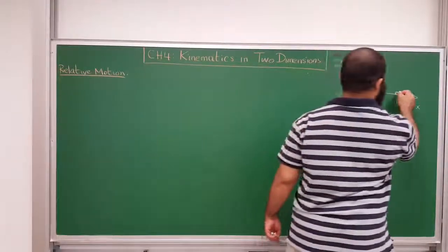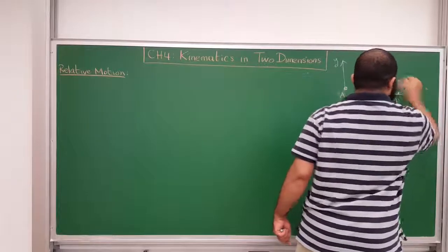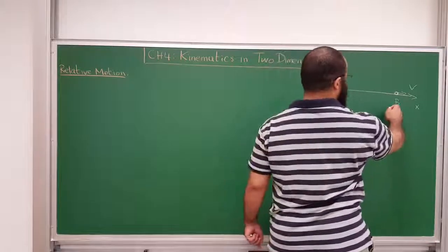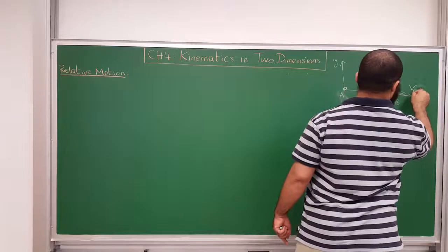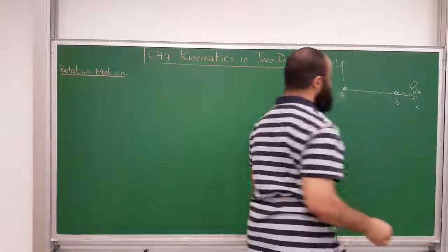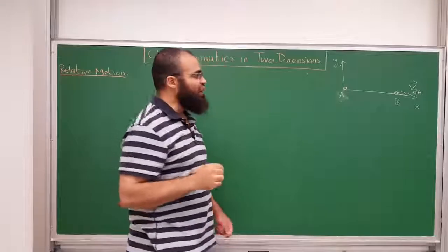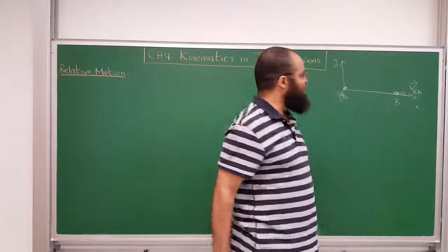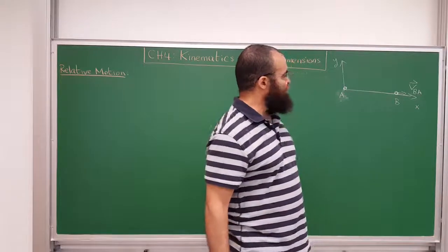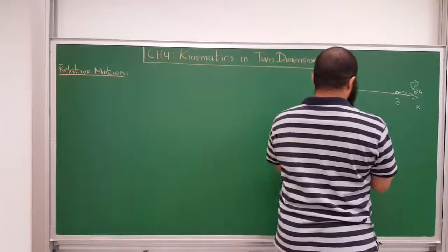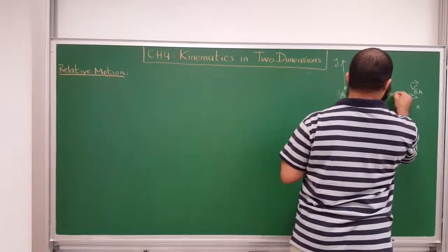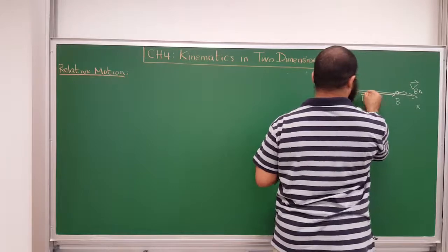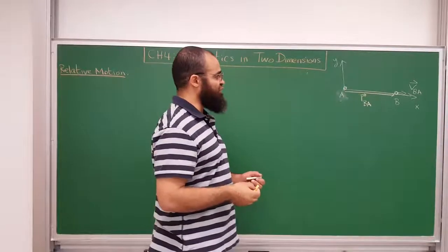Let's say object B is moving away from you. So I will call the velocity of B with respect to U, the velocity of B with respect to A, like this. The velocity of B with respect to A. So let's say the person is moving to the right, let's say 10 meters per second. So how do you determine their position? Well, you draw a vector from U to them. This is called the position of object B with respect to object A.